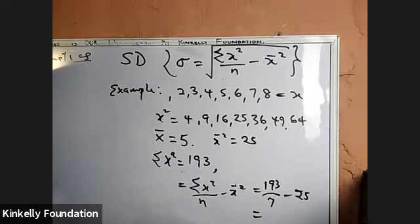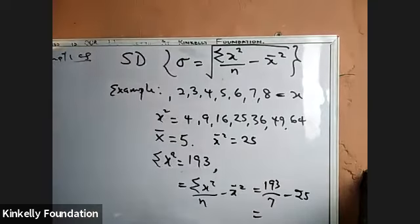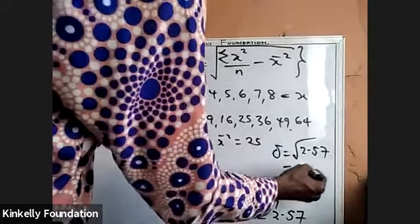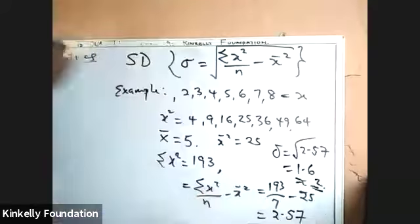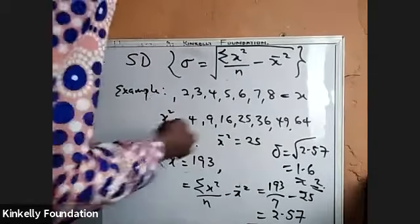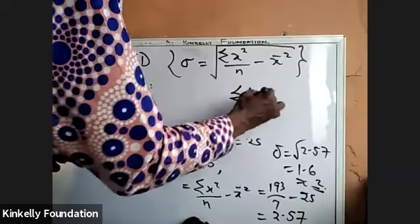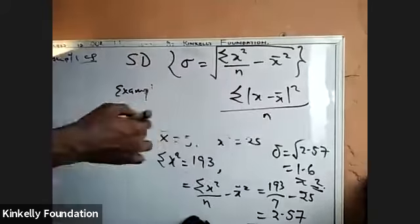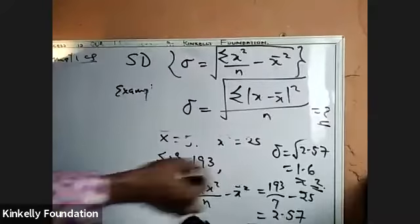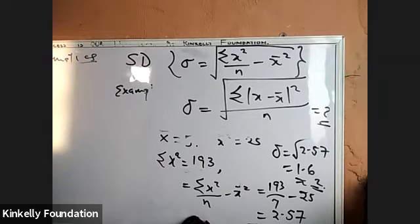Checking against the first formula — summation of (x minus x-bar) squared all over n — it gave us standard deviation equal to 2. When you use the alternative formula and approximate to the nearest number, you also get 2, confirming both formulas are consistent.